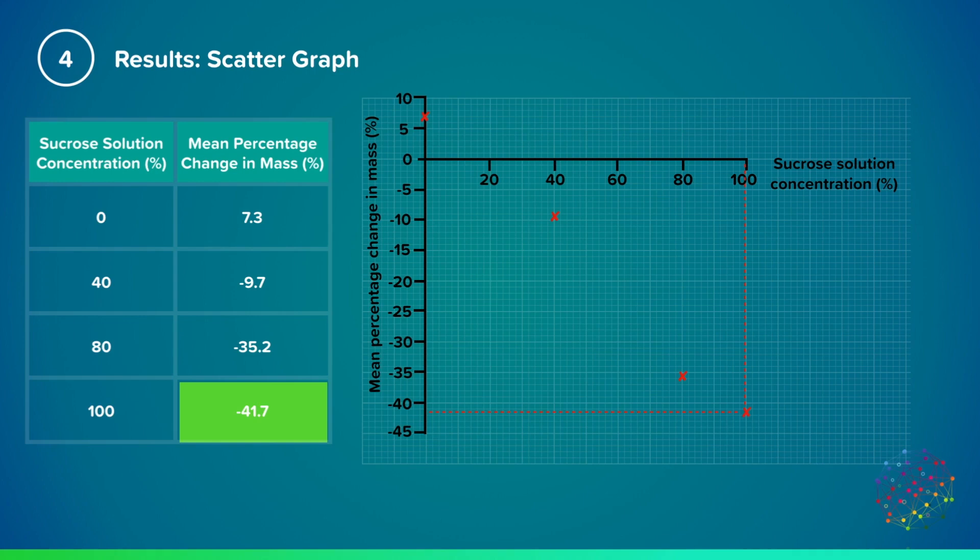Now we can see that as our data has been plotted, we can draw a line of best fit to show the general trend in the data. In this case we can draw a straight line with a ruler, but if the data was less linear, a curve would also be acceptable.